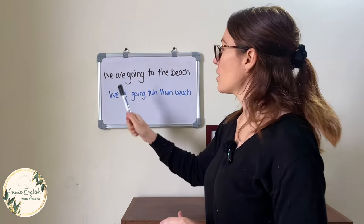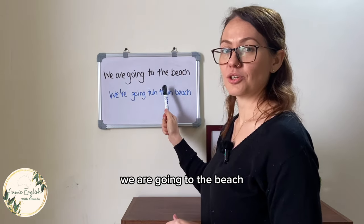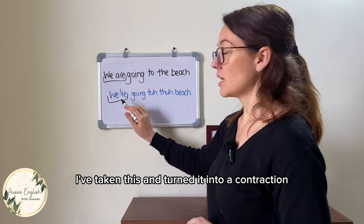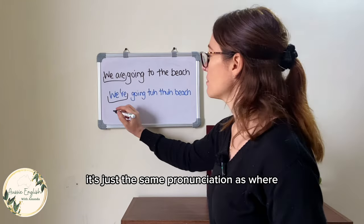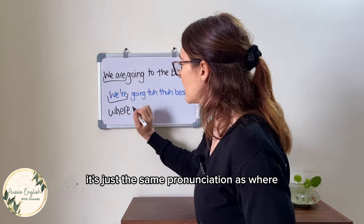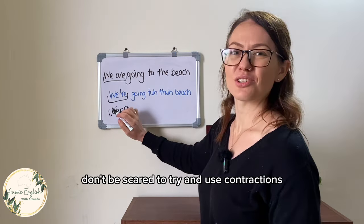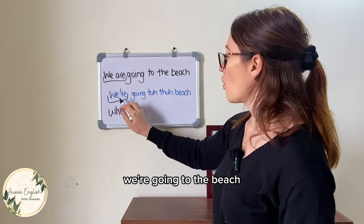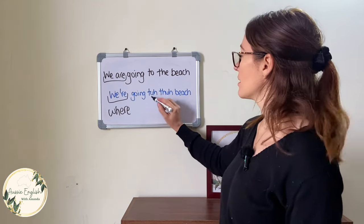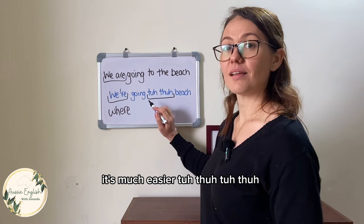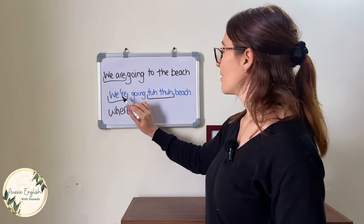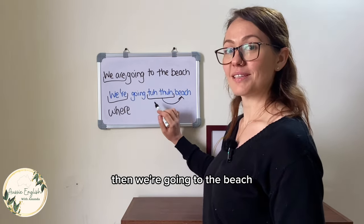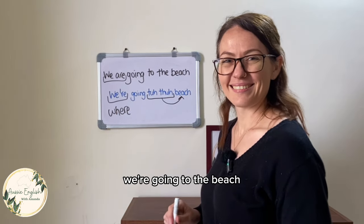And the last example: 'We are going to the beach.' I've taken 'we are' and turned it into a contraction — 'we're', which is actually just the same pronunciation as 'where'. So don't be scared to use contractions — they're actually quite easy and it's another way to help you sound more natural and native. 'We're going to the beach.' Practice 'to the beach' first, then link it: 'We're going to the beach.'